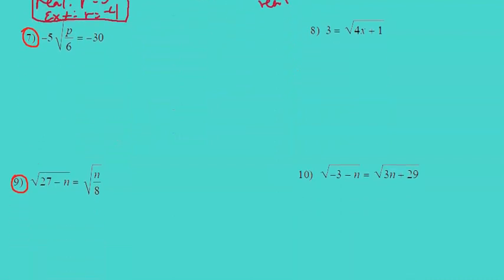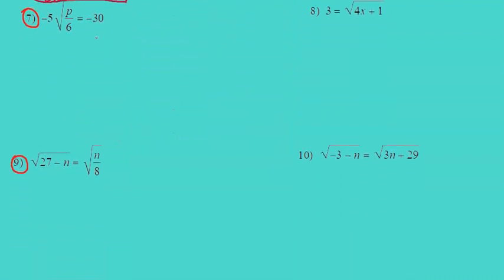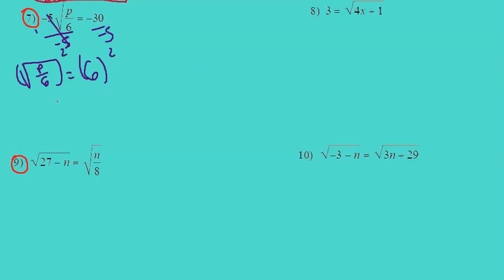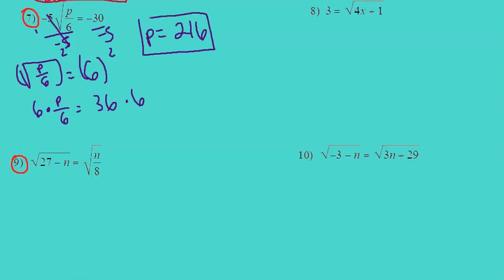Let's look at number 7. Negative 5 times the square root of p over 6 equals negative 30. Divide each side by negative 5, so you have the square root of p over 6 equals 6. Exponentiate each side by 2, giving p over 6 equals 36. Multiply each side by 6. You don't have to check for extraneous on this one since there's no variable on the outside of the root.